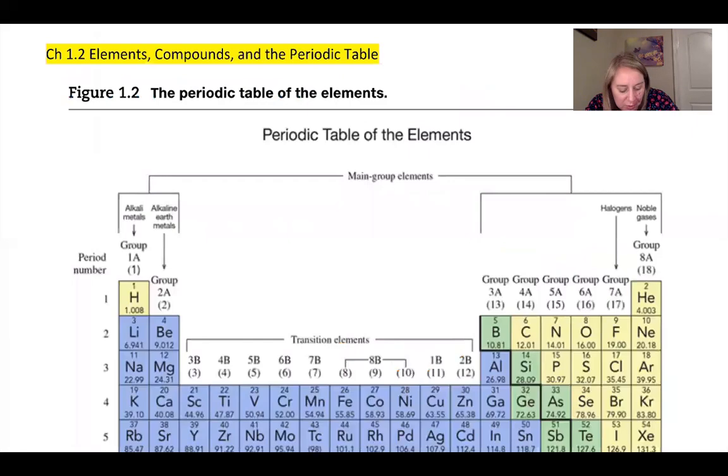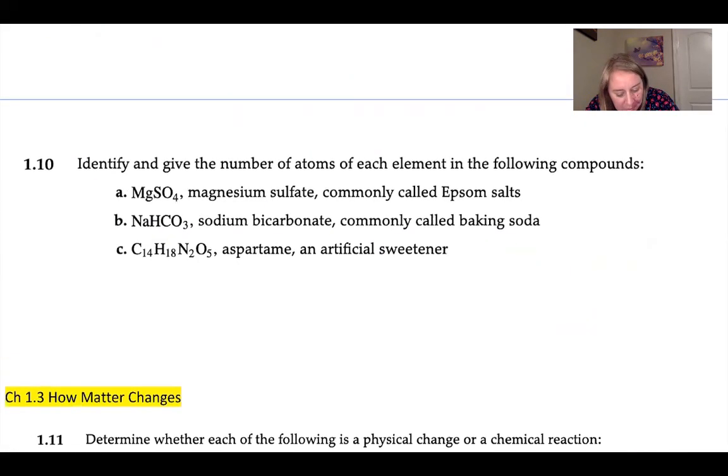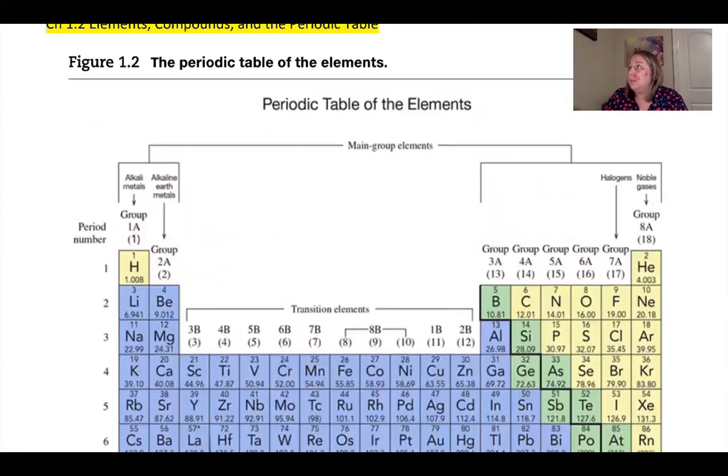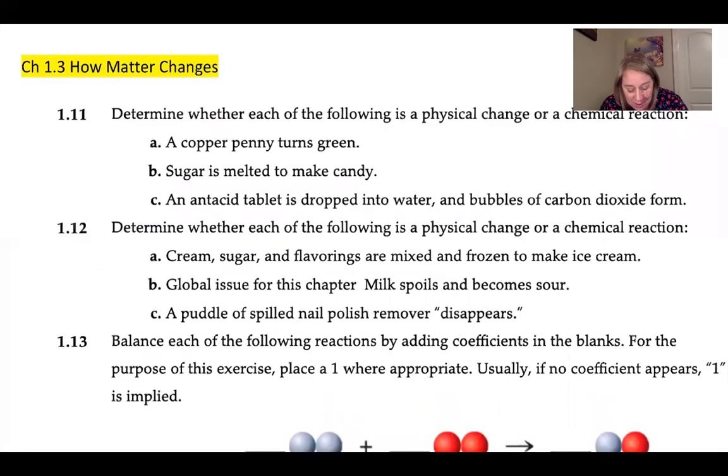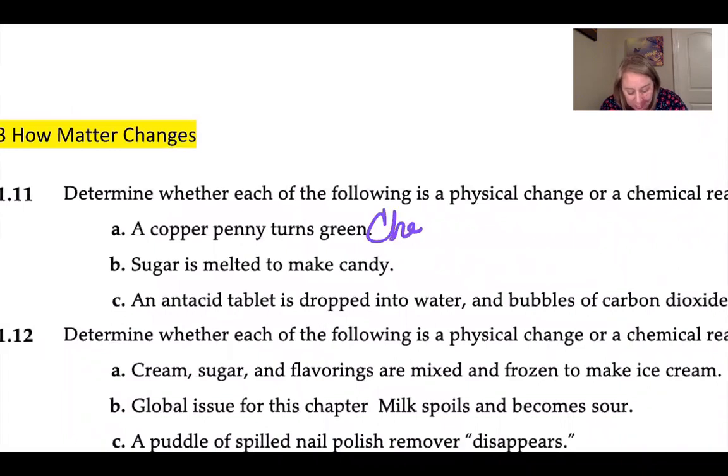So here are examples. We're going to remember do the odds. Determine whether each of the following is a physical or a chemical change. A copper penny turns green. This one might not be quite as intuitive as you think, but I'll give you a hint that the Statue of Liberty wasn't always green. The Statue of Liberty is made out of copper. When the copper reacted with the oxygen in the air in an oxidation reaction, it turned it green. So this is actually a chemical reaction.